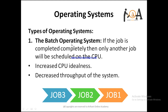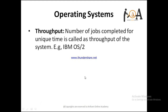In a batch operating system, if a job is completed completely, then only another job will be scheduled on the CPU. Suppose three jobs are there — until job 1 completes, job 2 will not start; after job 2 completes, job 3 will start. This will increase CPU idleness but will decrease the throughput of the system. The number of jobs completed per unit time is called throughput. IBM OS/2 is an example of a batch operating system.